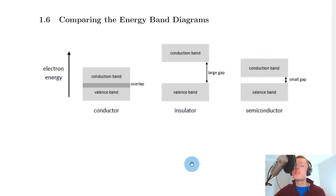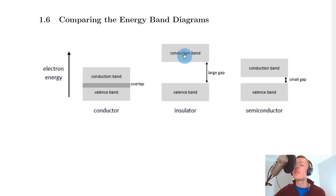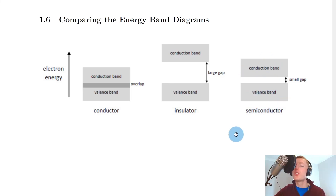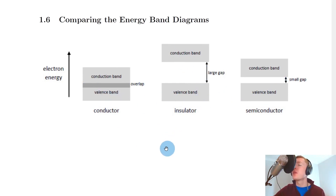Going back to the notes, we'll summarize and compare the energy band diagrams side by side. With electron energy going from bottom to top: for a conductor the conduction and valence bands overlap; for an insulator they are separated by a large band gap; and for a semiconductor they are separated by a small band gap. You need to be able to identify which is which by looking at the energy band diagram, describe what the diagrams look like, and I'd recommend practicing sketching these out.